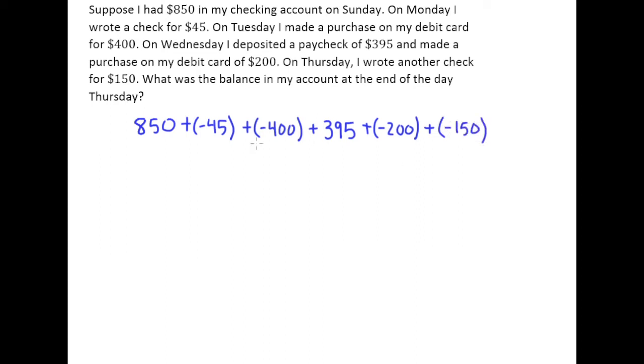Now, as we saw in a previous video, sometimes it's nice to gather all your positives in one place and all your negatives in one place. So let's put our $850 and our $395 together. And then we'll put all the negatives together. And remember, the reason that we like to do this when there's lots of positives and negatives involved is because it's going to cut down on the number of steps that we have to take to solve this problem.